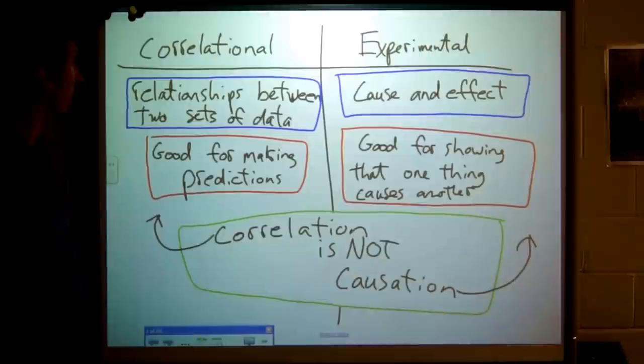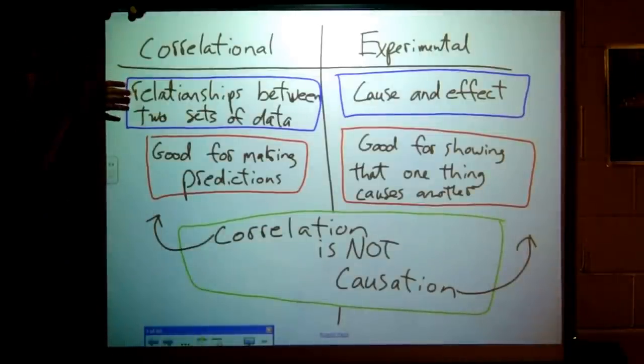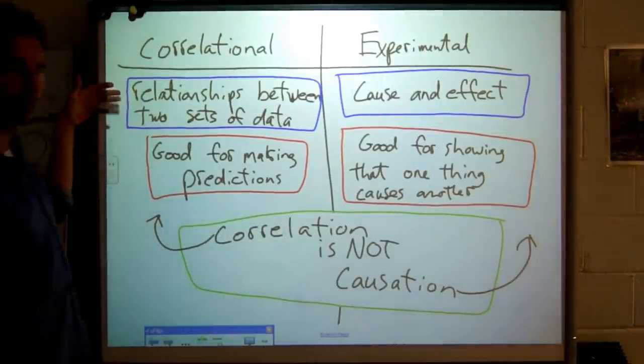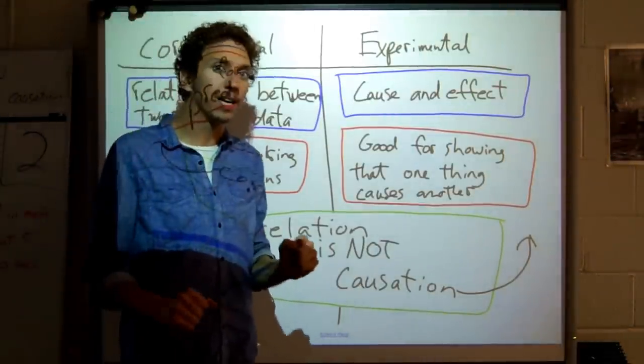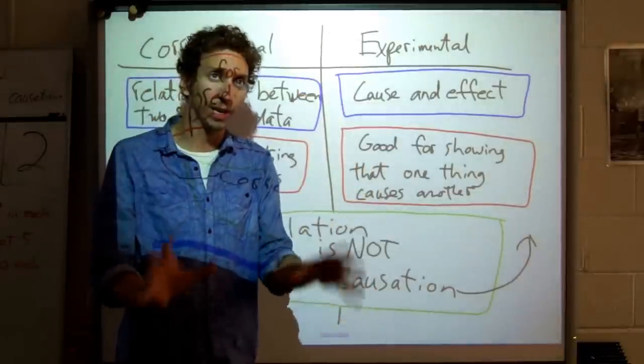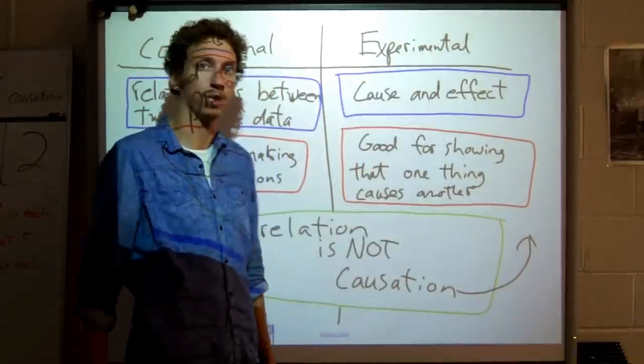There's really two main different types here. There's correlational studies and there's experimental studies. A correlation shows relationships between two different sets of data. By sets of data, I mean like lists of data. That could be two columns in an Excel spreadsheet.